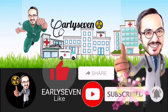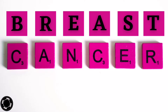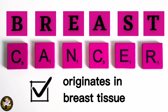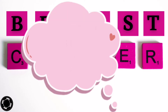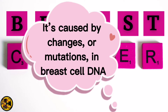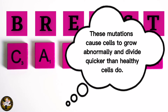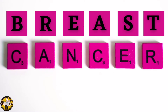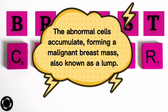What do we know about the cause of breast cancer? Breast cancer originates in breast tissue. It's caused by changes or mutations in breast cell DNA. These mutations cause cells to grow abnormally and divide quicker than healthy cells do. The abnormal cells accumulate, forming a malignant breast mass, also known as a lump.